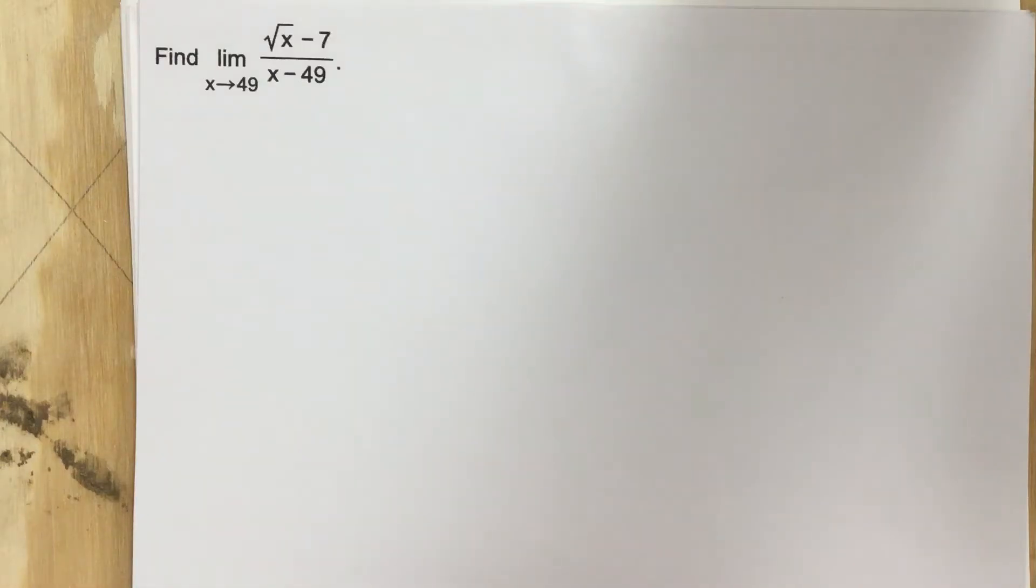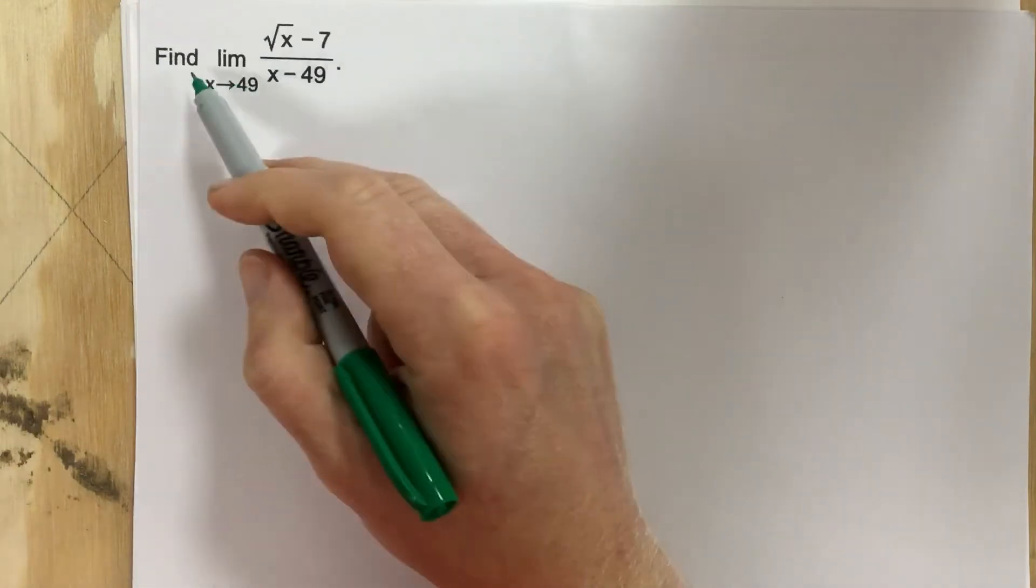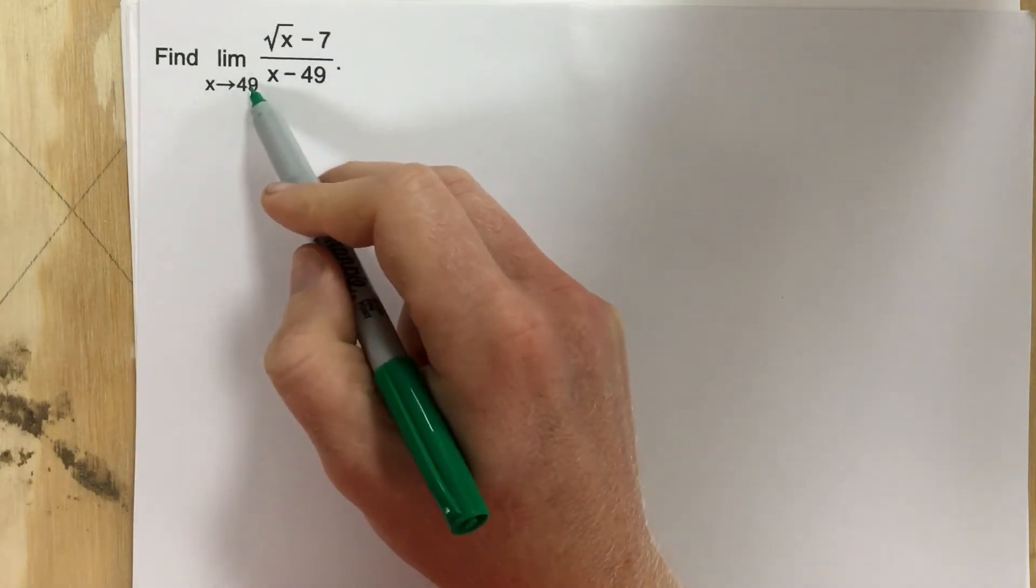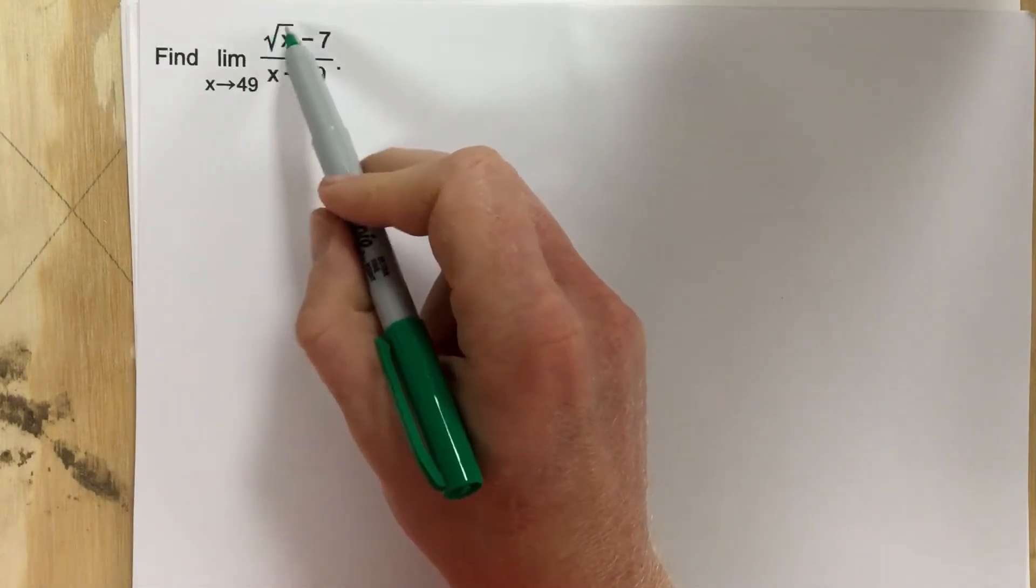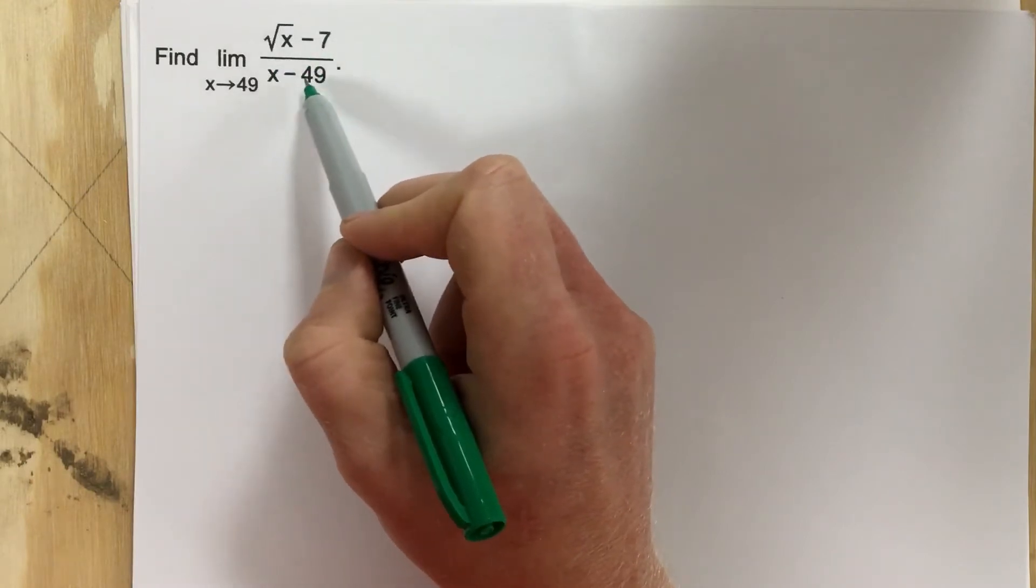This is problem number 7 for section 2.2. In this problem, find the limit as x approaches 49 for the function root x minus 7 over x minus 49.